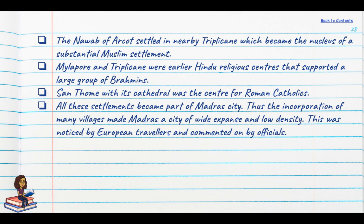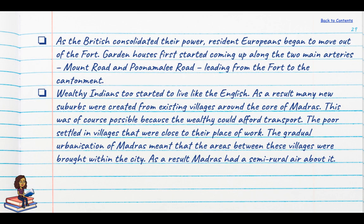The incorporation of many villages made Madras a city of wide expanse and low density. As the British consolidated their power, resident Europeans began to move out of the fort. Garden houses first started coming up along the two main arteries — Mount Road and Poonamallee Road. Indians also started to live like the English, and many new suburbs were created from existing villages around the core of Madras. The wealthy could afford personal transport; the poor settled in villages closer to their place of work. This gradual urbanisation gave Madras a semi-rural air, quite unlike what we see in Bombay and Calcutta.